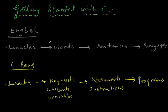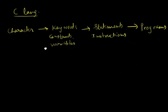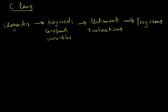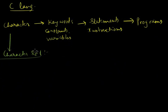Just as we learn English by first learning its characters, we will follow a similar approach with C. We first learn what characters are available in C — the character set. The character set of C is as follows.